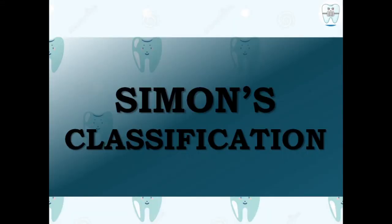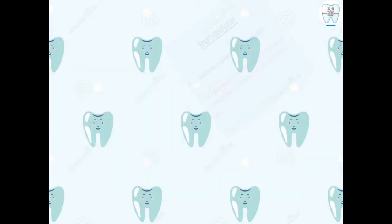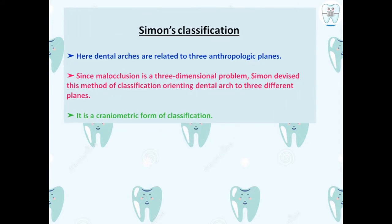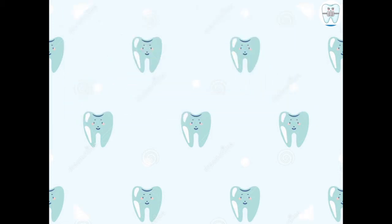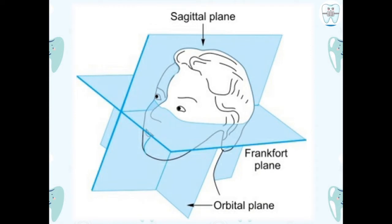Today's topic is Simon's Classification. Since malocclusion is a three-dimensional problem, Simon devised this method of classification orienting dental arches to three different planes. It is a craniometric form of classification. The three planes used are the sagittal plane, the Frankfurt Horizontal (FH) plane, and the orbital plane.